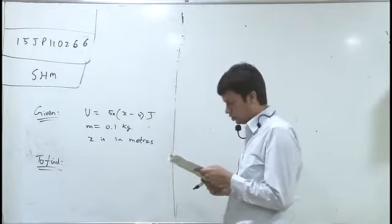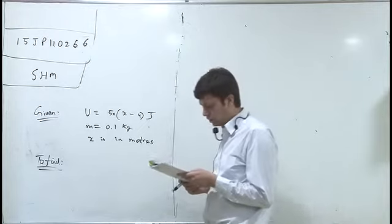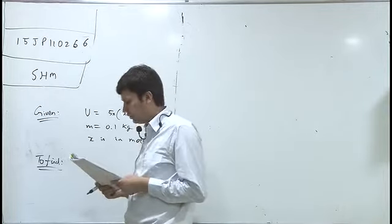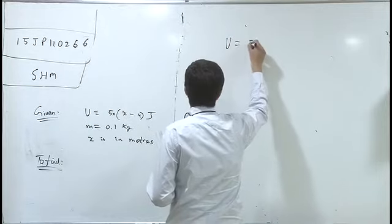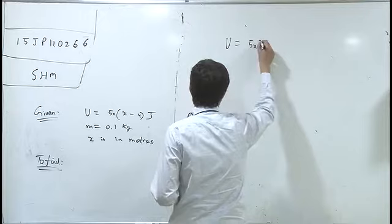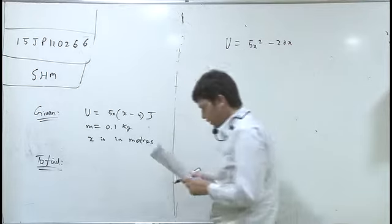I have to check some options that the particle is acted by a constant force. So what do I do? First I write U equals 5x squared minus 20x.